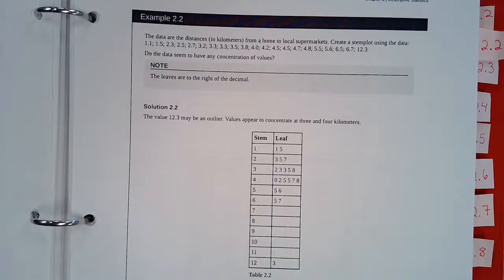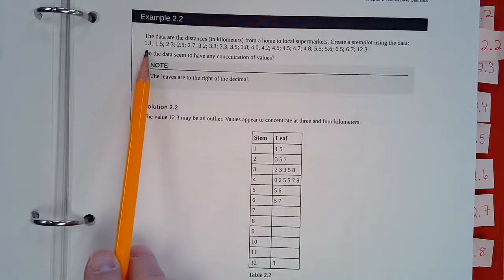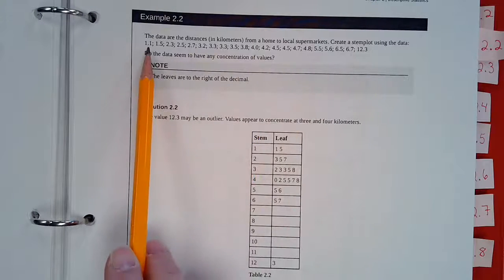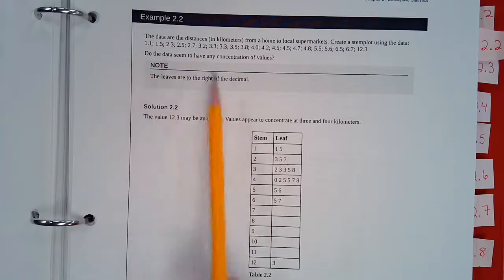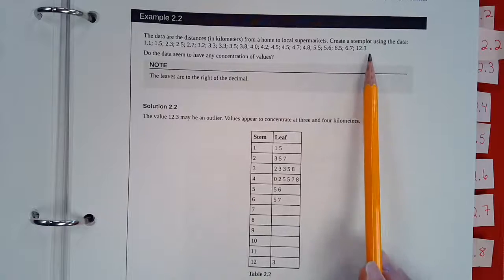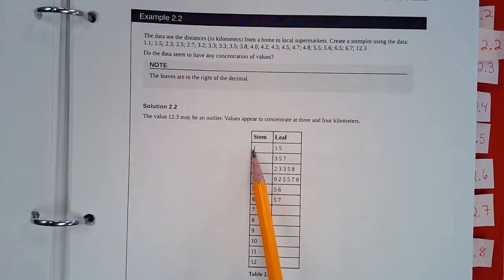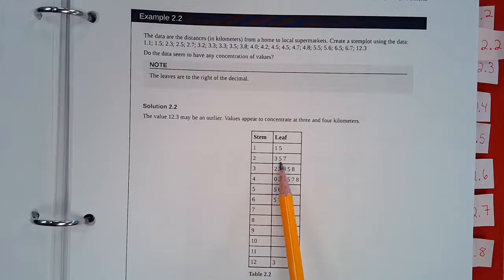Alright, so here's another example of a stem and leaf plot, but this one's doing it with decimals. So this one, we've got our data set that's up here and our first data value is 1.1 and our last data value is 12.3. So when you look at our stem and leaf plot, this means 1.1 and 1.5, 2.3, 2.5 and 2.7 and so forth as you move down your stem and leaf table.